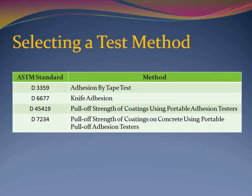Prior to performing an adhesion test, you must select a test method. The project specification should indicate the required method, as the various methods can generate very different results. There are three primary ways to test the adhesion of a coating system, including tape, knife, and pull-off. The three methods are described in four ASTM standard test methods. The chart on the slide lists the methods that are commonly used to test the adhesion of industrial coatings.